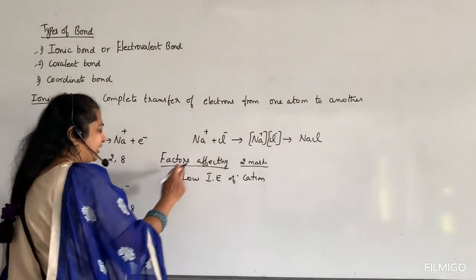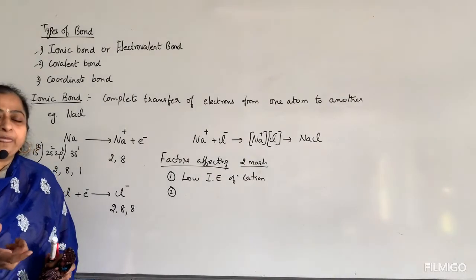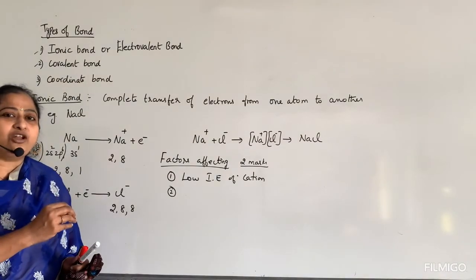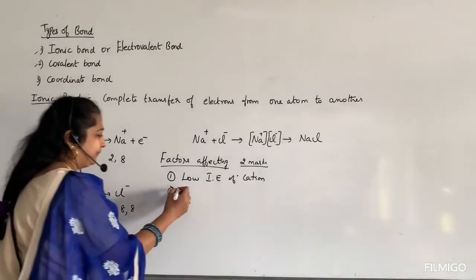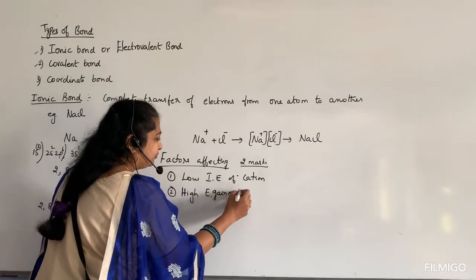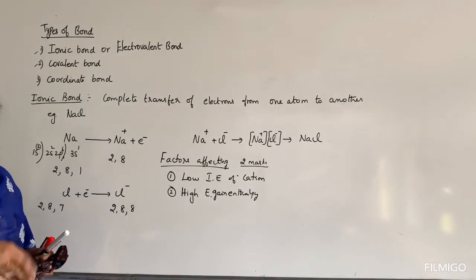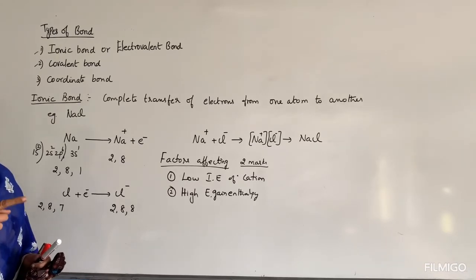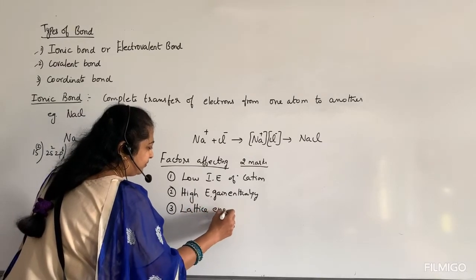The second factor is high electron gain enthalpy. Electron gain enthalpy is the energy released when an electron is added to the outermost shell of an isolated gaseous atom. Chlorine easily takes the electron, releasing more energy — so a high electron gain enthalpy favors ionic bond formation. The third and very important factor is lattice energy or lattice enthalpy. Lattice means crystal — it is a solid structure.